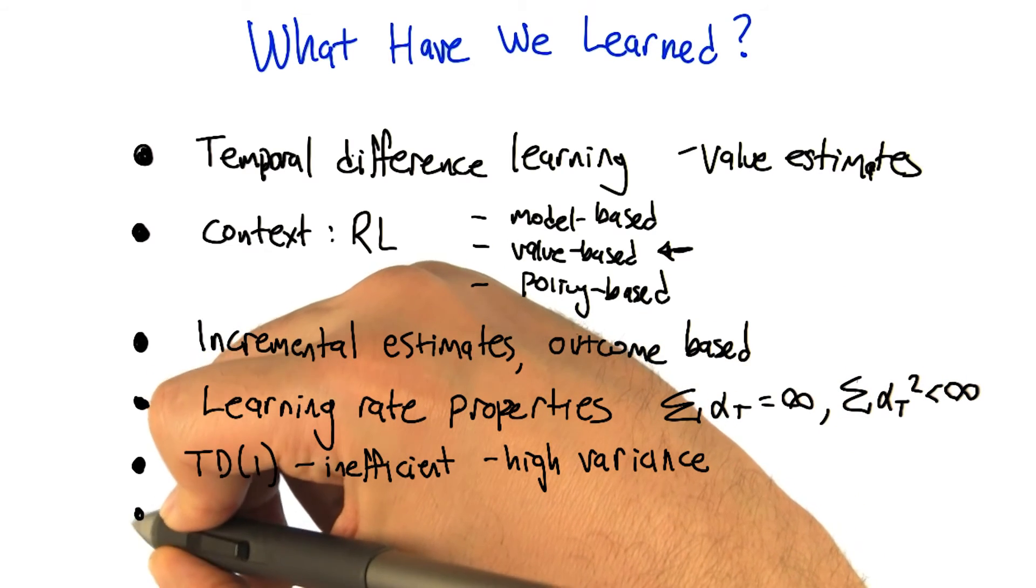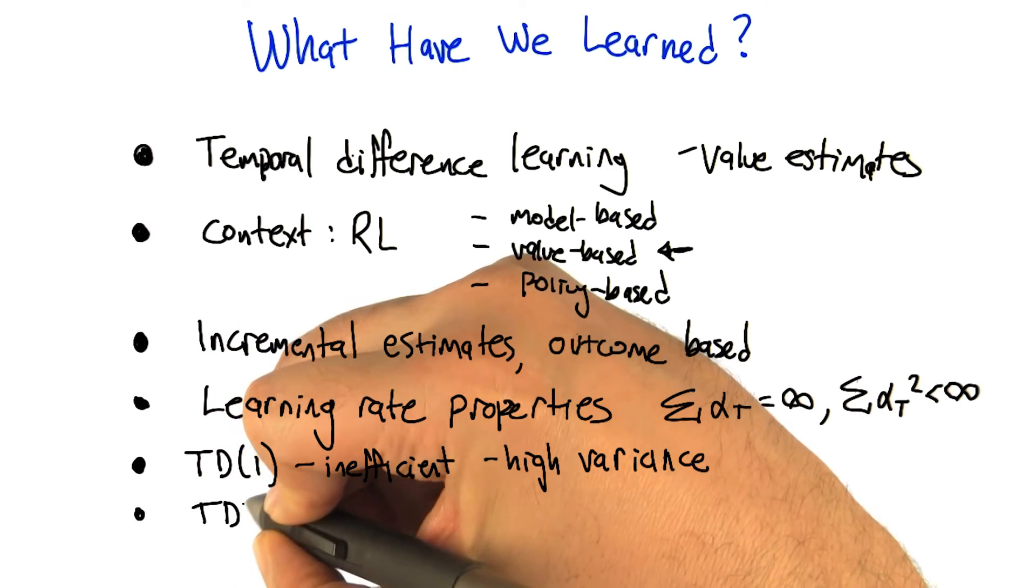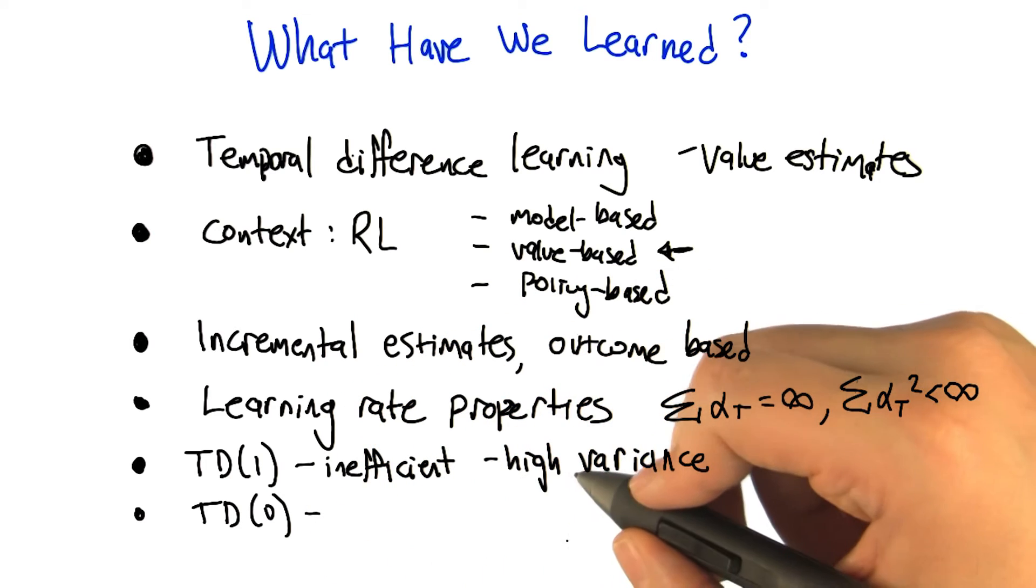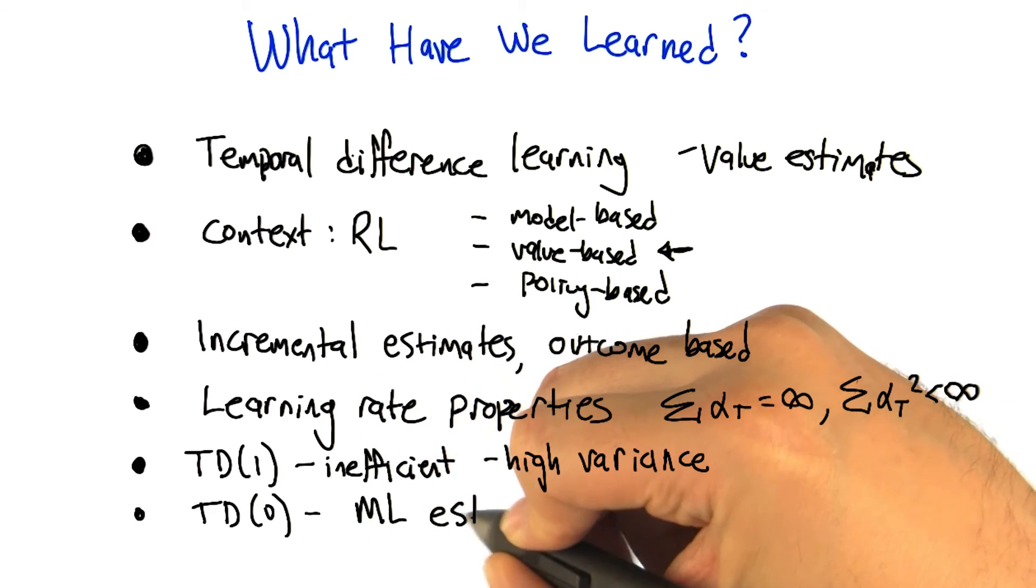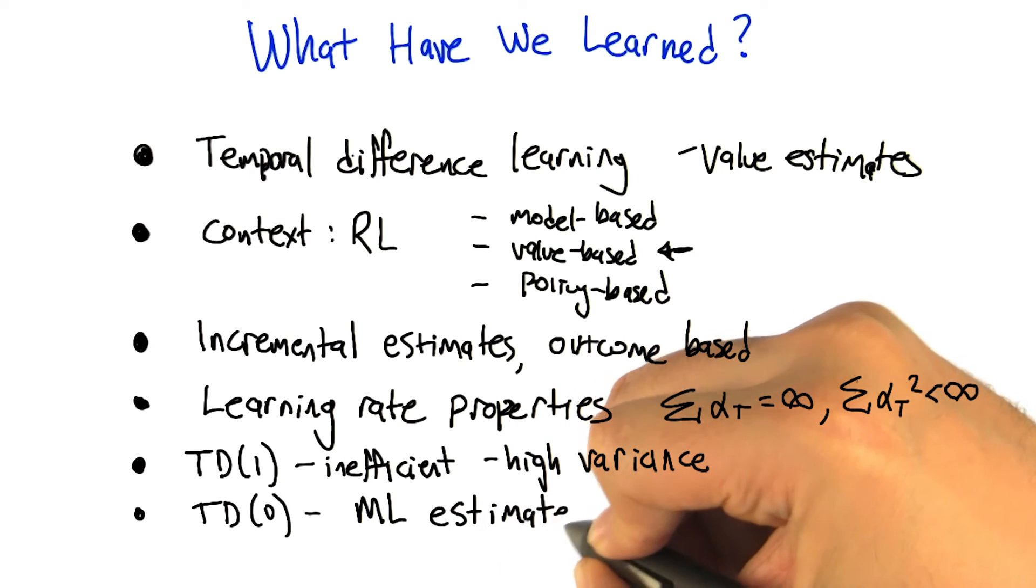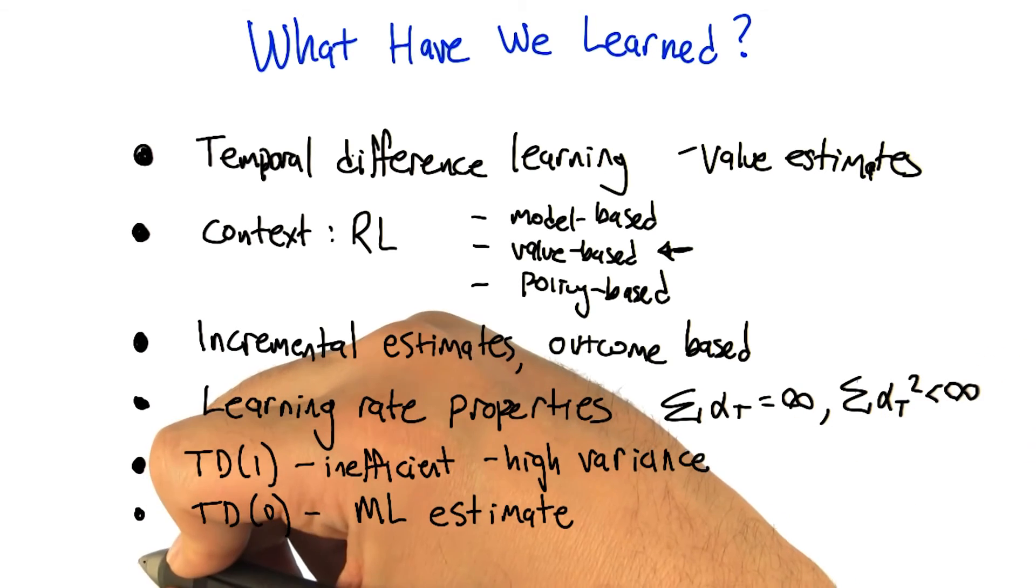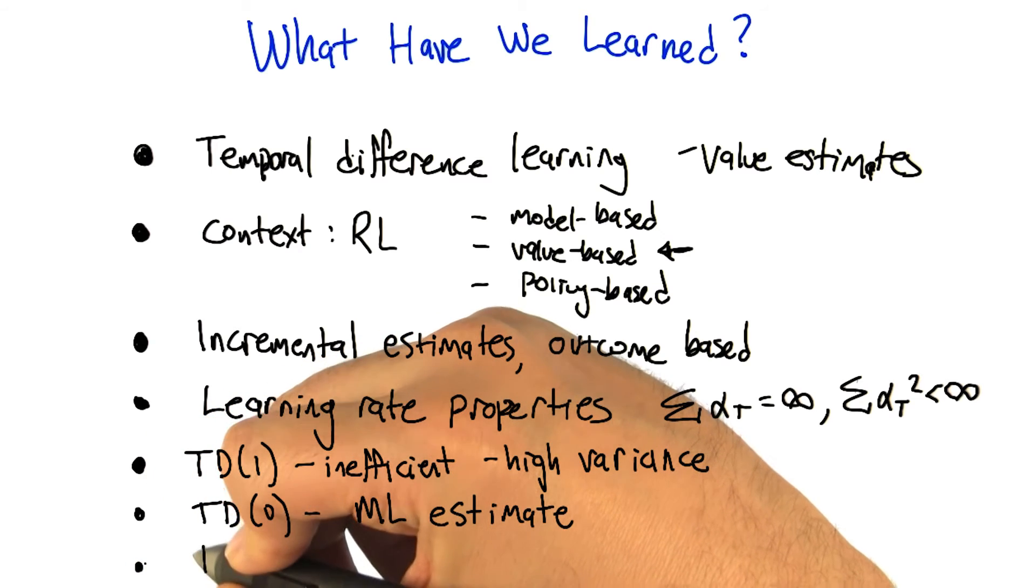But we came to the rescue, and when I say we, I mean you, came to the rescue with TD0, which has the nice property that it gives you the maximum likelihood estimate. I prefer to think of it as the Michael Littman estimate. Yeah, I know you do. I've seen how you snuck that in. And then it got us to the very end, which is good, because you're running out of space on the slide. We generalize TD1 and TD0 into something we call TD lambda.